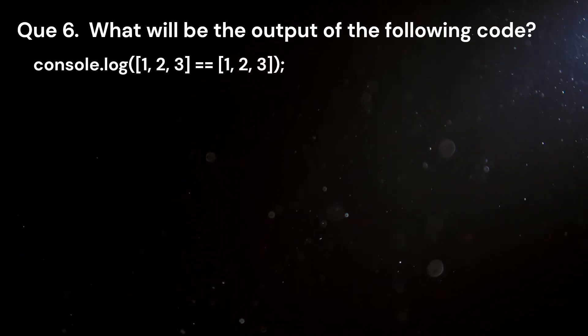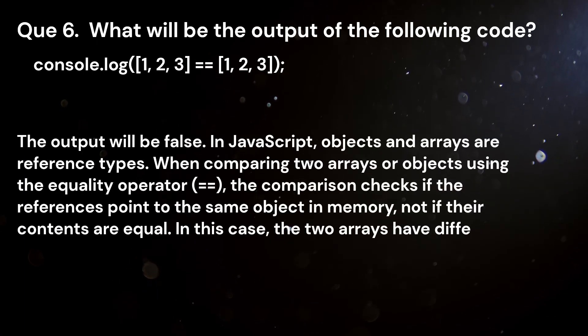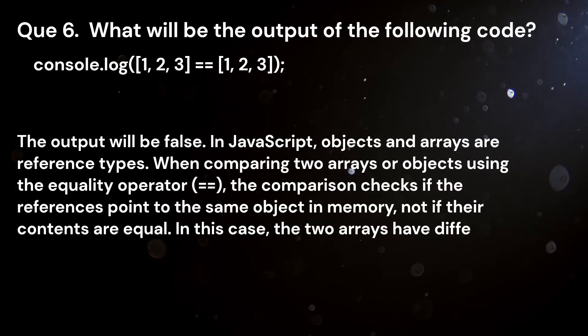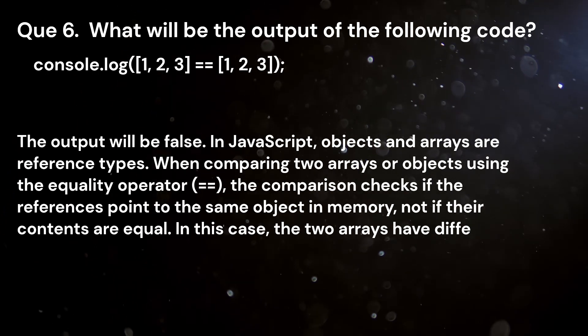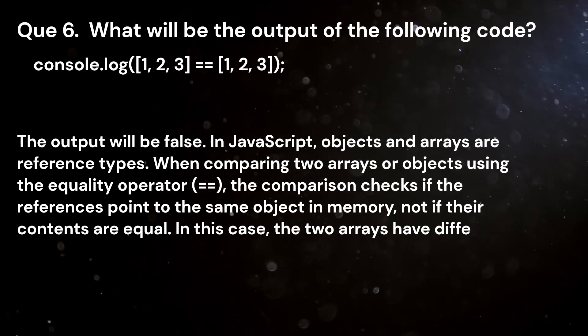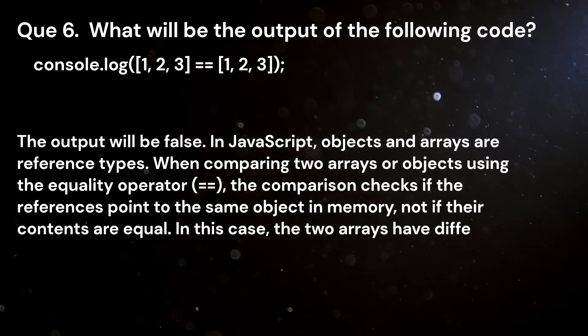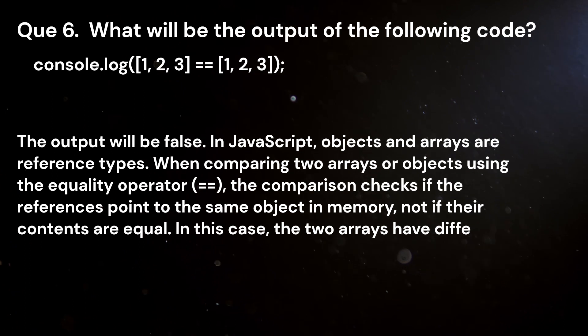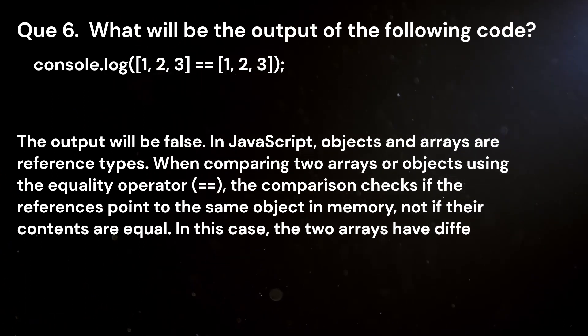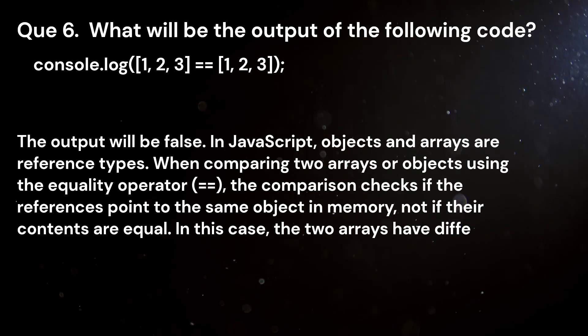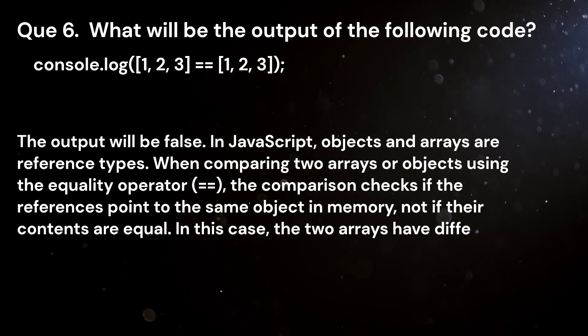Question 6. What will be the output of the following code? console.log([1,2,3] === [1,2,3]). Answer. The output will be false. In JavaScript, objects and arrays are reference types. When comparing two arrays using the equality operator ===, the comparison checks if the references point to the same object in memory, not if their contents are equal. In this case, the two arrays have different references, hence the result is false.